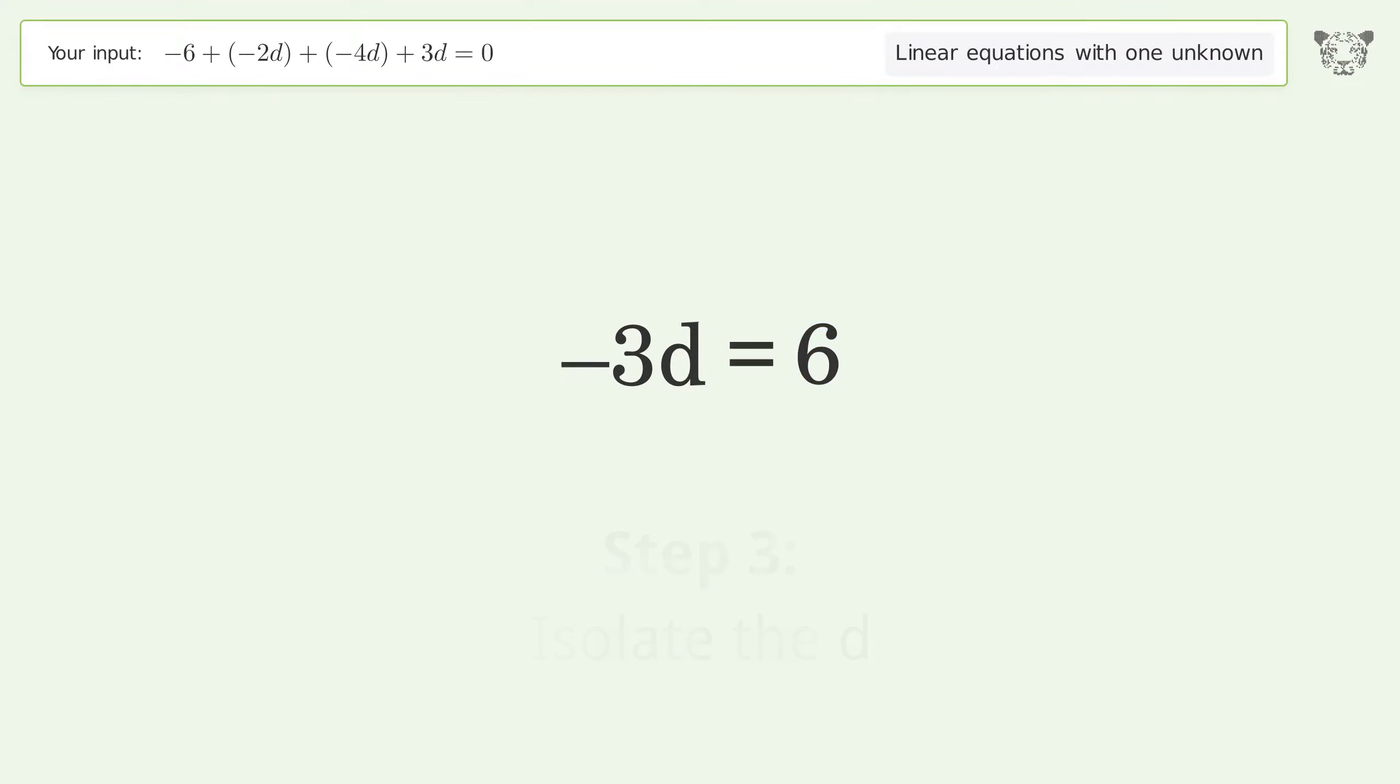Isolate the d. Divide both sides by negative 3. Cancel out the negatives.